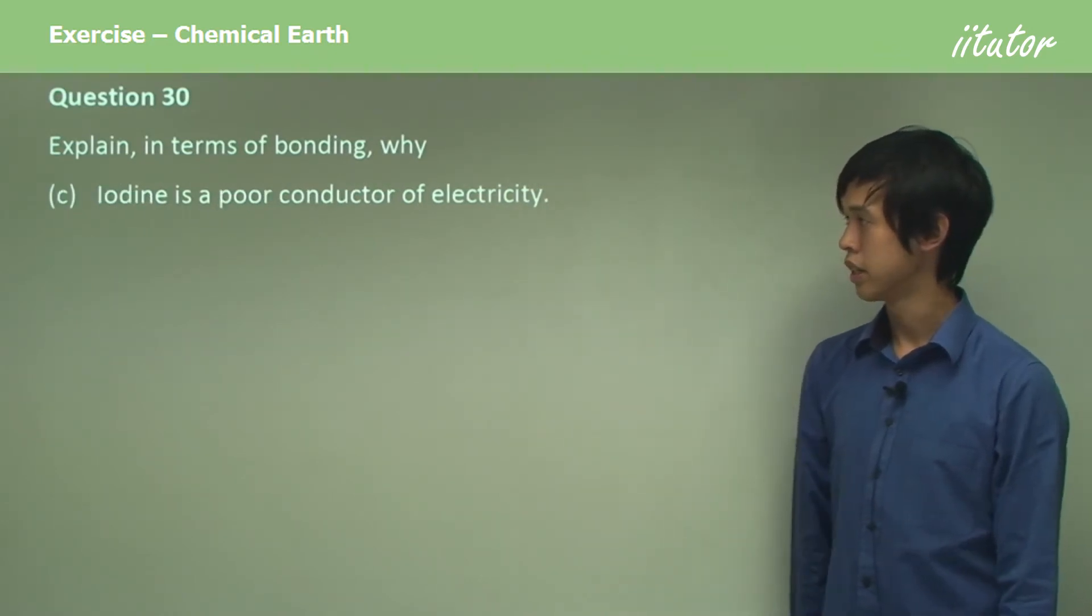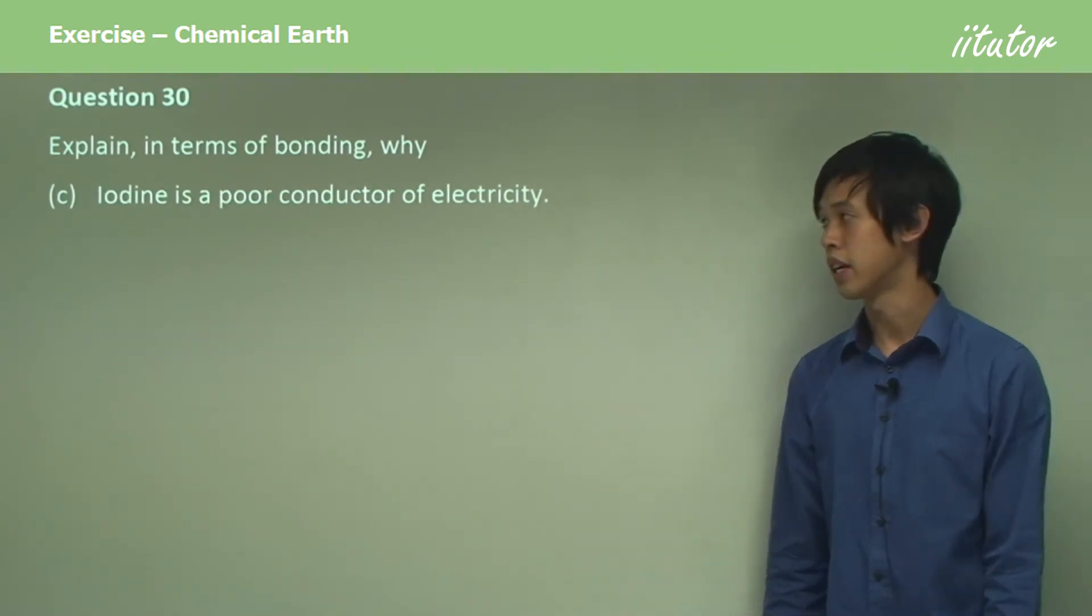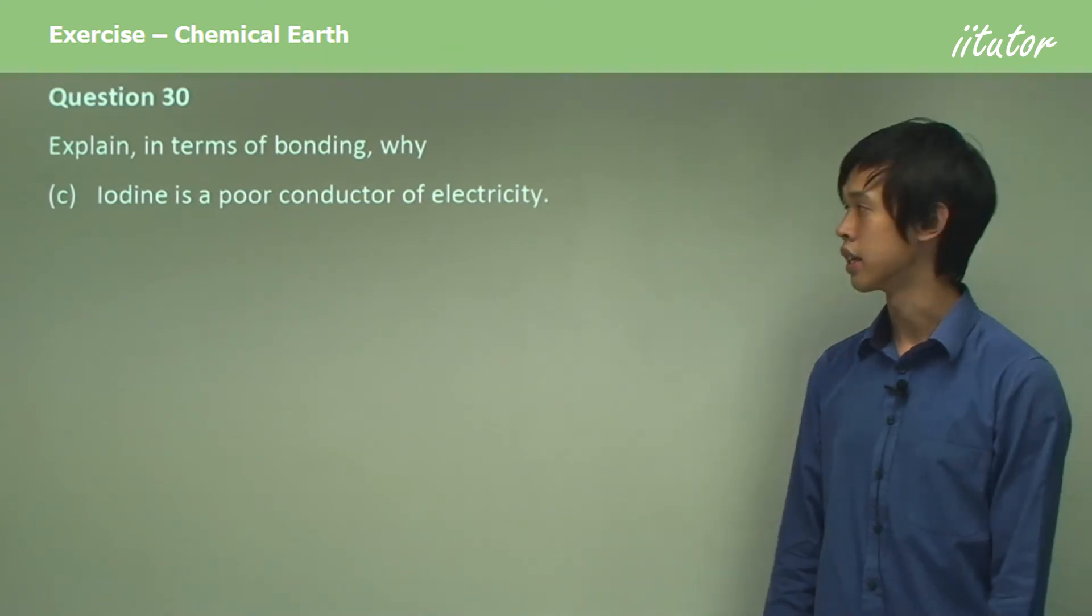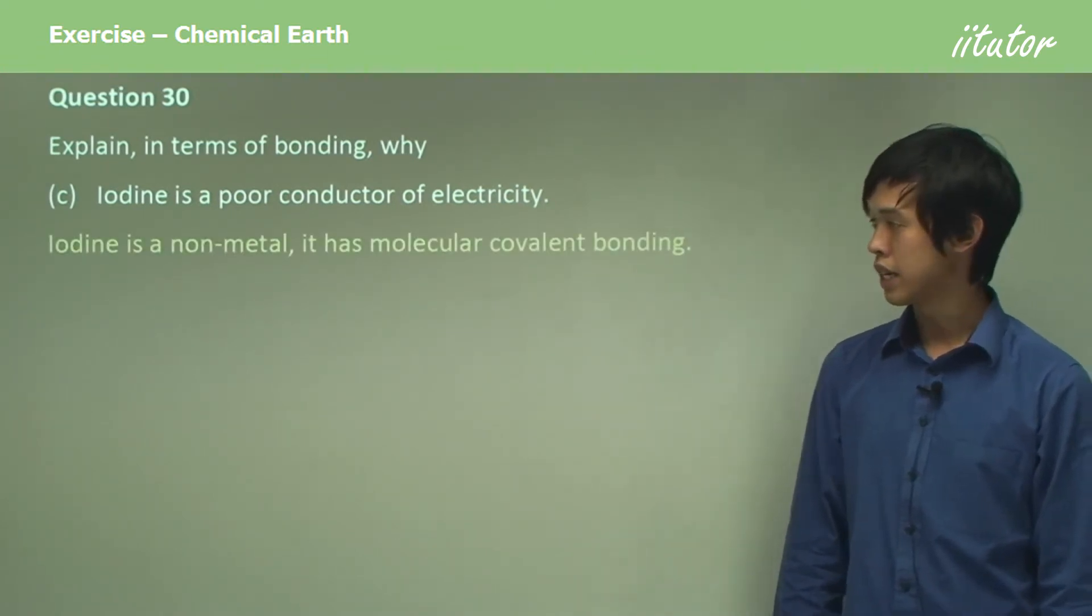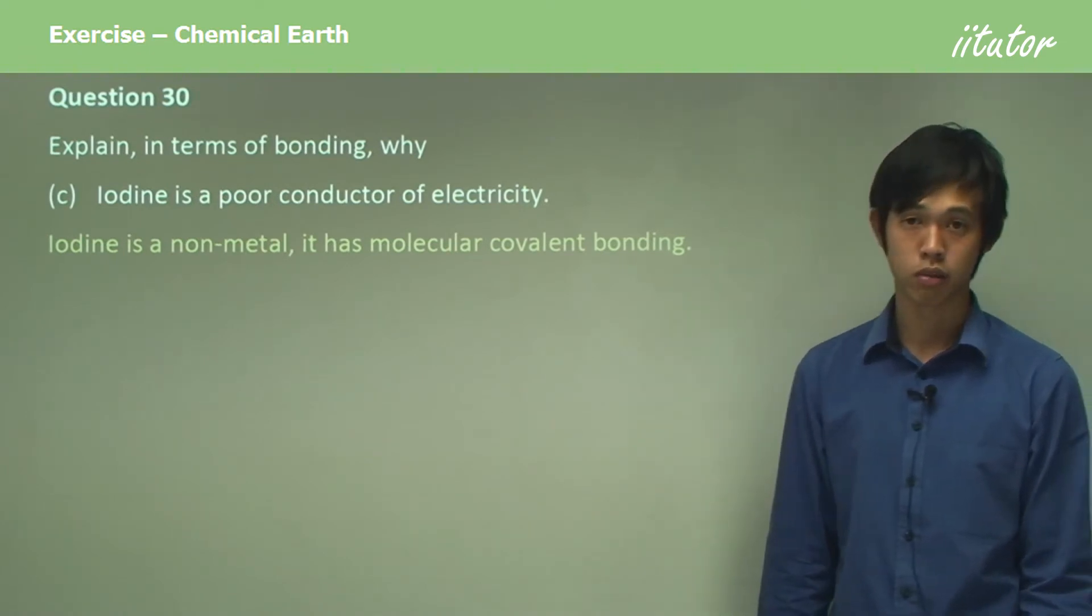Explain why iodine is a poor conductor of electricity. Well, iodine is a non-metal and it has molecular covalent bonding.